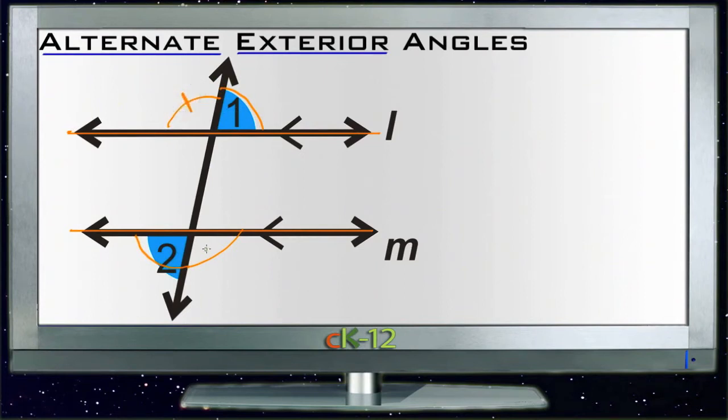And any pairs of angles that are on alternate sides of the transversal are alternate exterior angles, and they're equal. So angles one and two are equal, and the unmarked angles that are the companions to them are also equal.